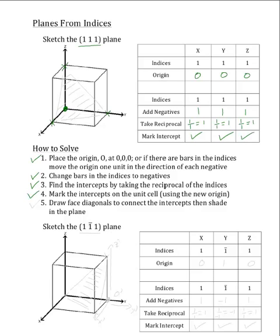Now the next step is to draw the face diagonals. So we will draw a line connecting the x and y-intercepts along the face diagonal. Then we will draw a line connecting the y and z-intercepts, also along the face diagonal. And finally, we will draw a line connecting the z and x-intercepts along another face diagonal. Now all that's left to do is shading the plane, and you should see it beginning to take shape. And there you have it — that is how to sketch the 1,1,1 plane.